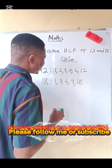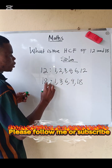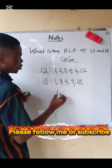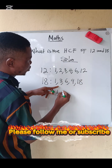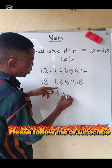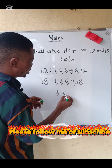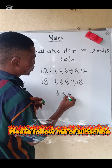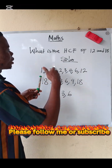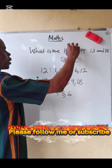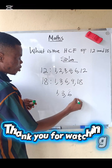Now let's look at the common factors between 12 and 18. We have one, then we have three, and we have six. That's all. We are asked to find the highest common factor, so the highest common factor is the bigger number.